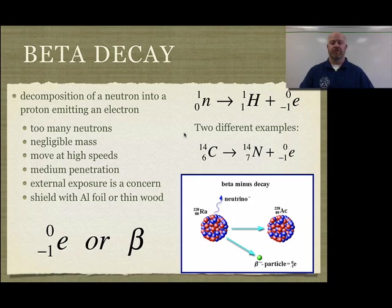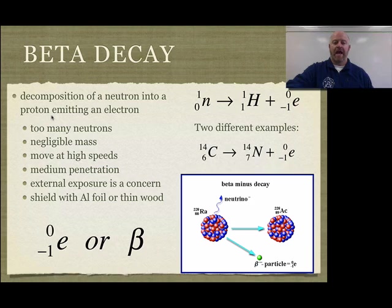Beta decay, which is the first one that we saw in the video, is when we take and decompose a neutron into a proton. That sounds kind of weird that we can turn a proton into a neutron, but it is actually possible because protons and neutrons are made up of smaller particles called quarks, so it's a rearrangement of those quarks. It happens because we have too many neutrons, so it's a way to shift that ratio to better balance our protons and neutrons.